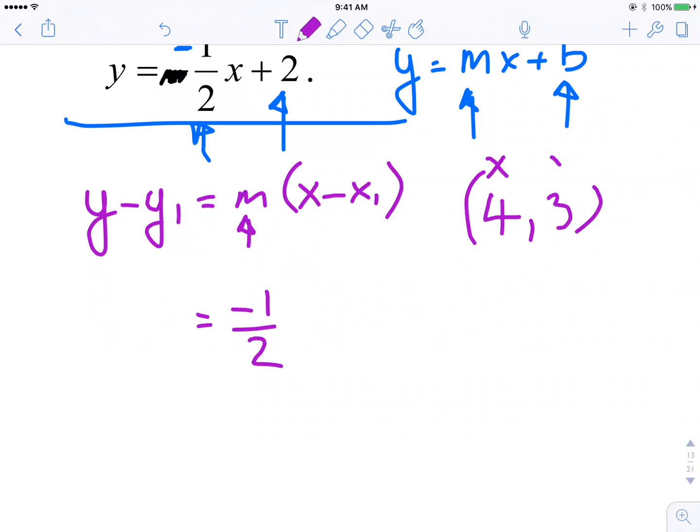So this is going to be negative 1 over 2, and I know it passes through the point (4, 3). Well, here's my x value, here's my y value, and I could substitute those in. y minus 3 is equal to negative 1 over 2, x minus 4. So now I have an equation.